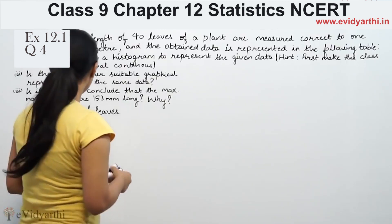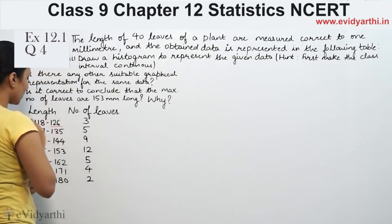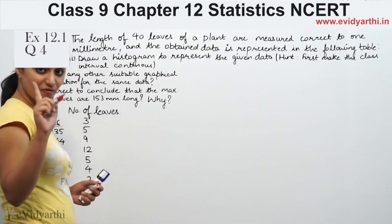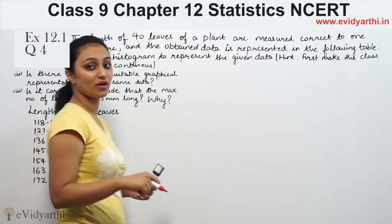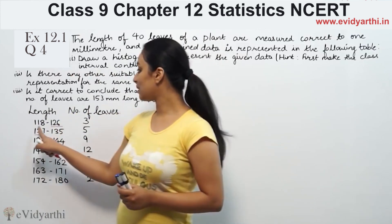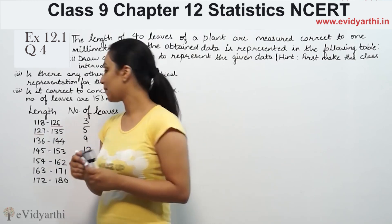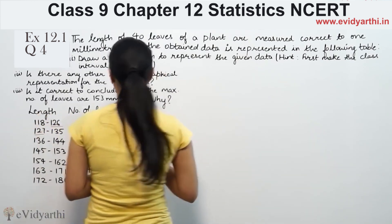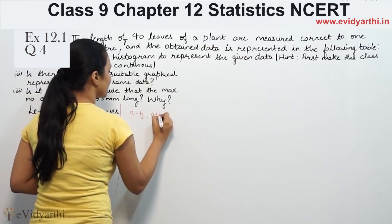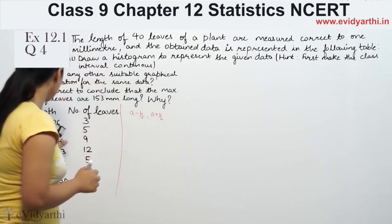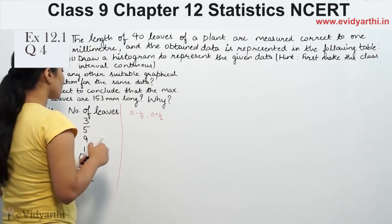To make the class intervals continuous, we need to find the upper limit and the lower limit. The difference between the class boundaries is 1. So h divided by 2 is 0.5. The lower limit is found by subtracting 0.5 and the upper limit by adding 0.5, where h is the difference between the class boundaries.